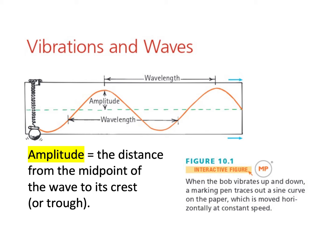If we want to understand how waves behave, we need to understand the different parts of the wave. The first thing we're going to talk about is called the amplitude. The amplitude is the distance from the midpoint of the wave. The middle of the wave is represented by a dashed green line across the center. The crest is the maximum height of the wave, and the trough is the minimum height. The amplitude is the distance from the midpoint to the crest — or equivalently, from the midpoint down to the trough.